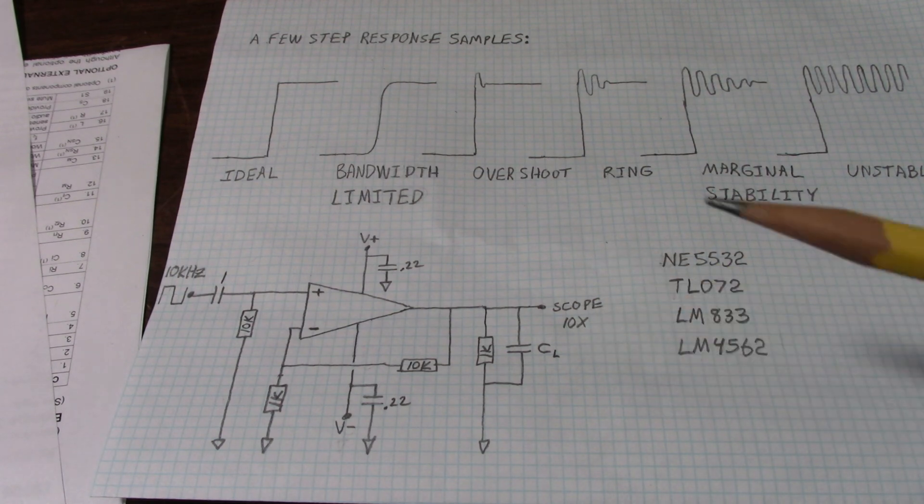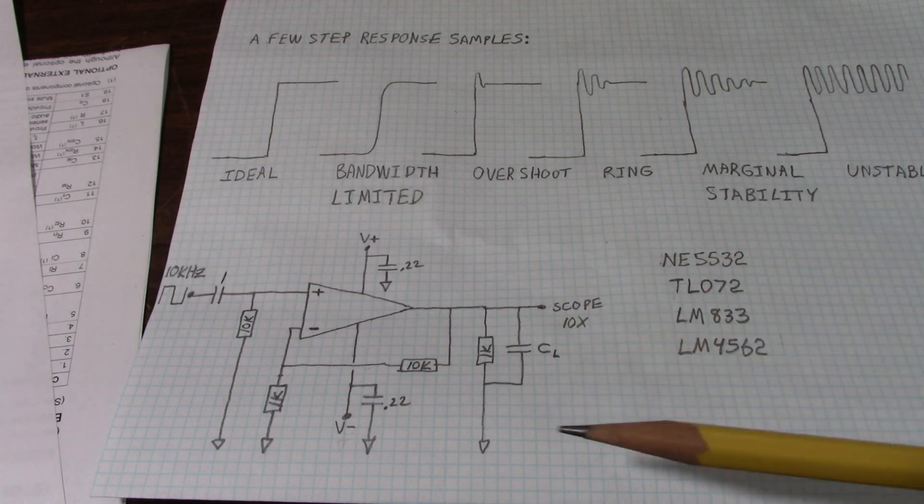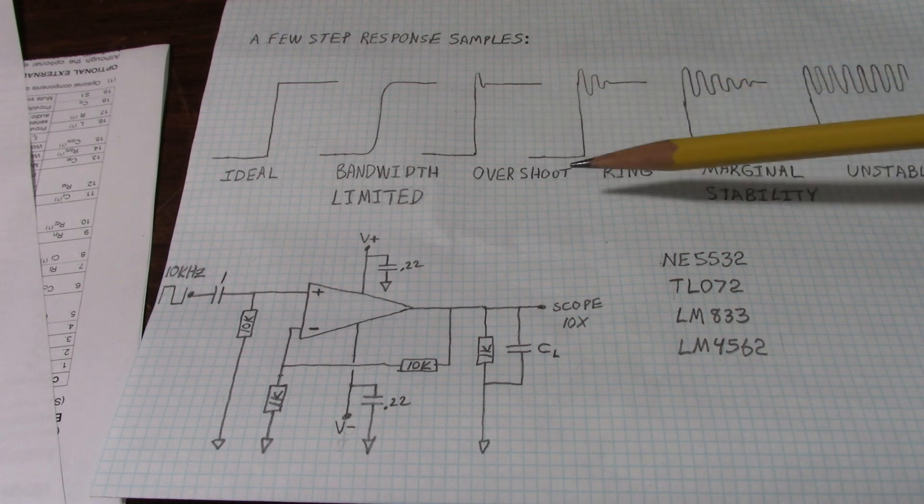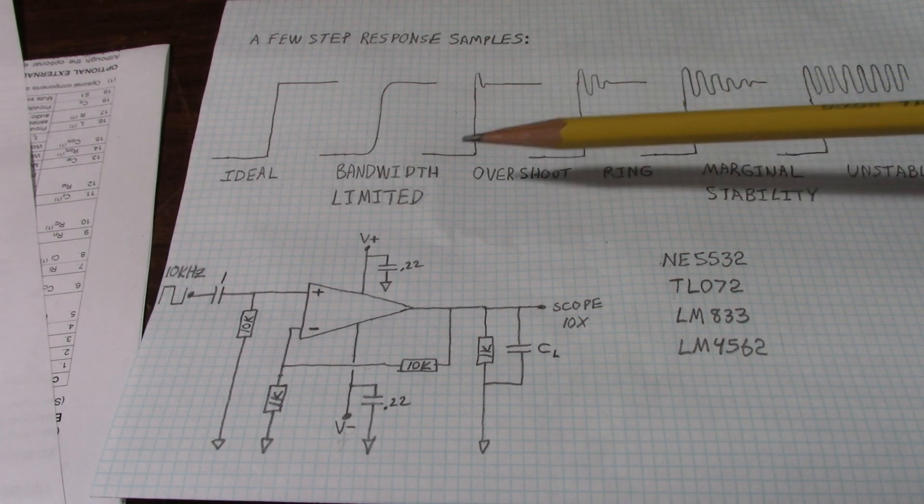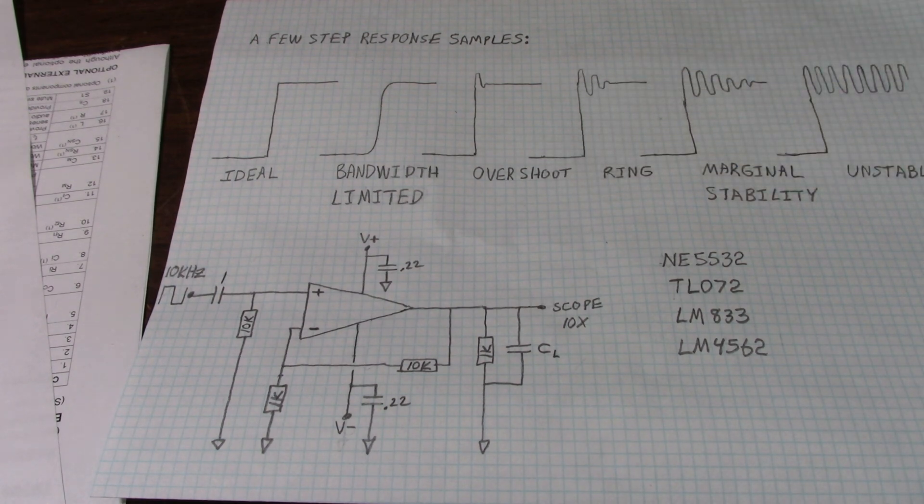And since we're dealing with high frequencies, we'll use the 10x mode on the oscilloscope probe. Now, we're using a 10 kHz waveform. And that's not that high frequency, but we're actually concerned with the high frequency components. You know, the ringing, you know, the quality of the edge. So we have to use the 10x mode on the scope.